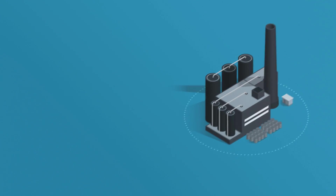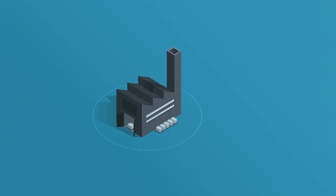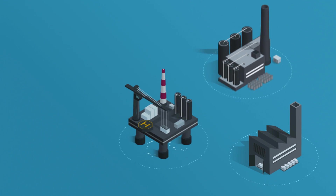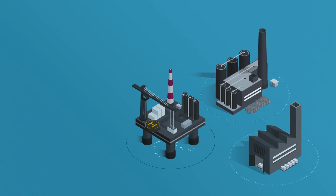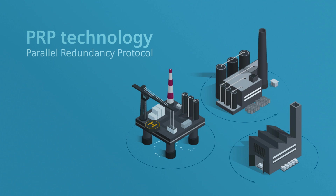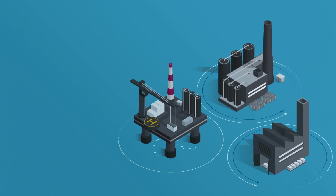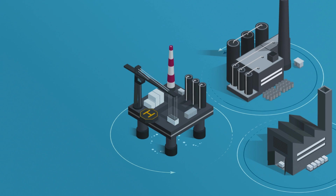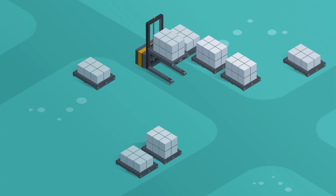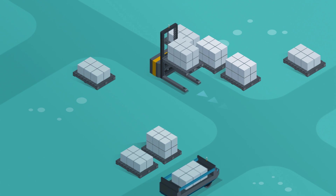Fast and reliable communication is the most important requirement in industrial networks. And to achieve seamless redundancy, PRP technology is the preferred choice. Two redundant networks transfer the data flow simultaneously. This means the system is not affected if one of the two networks fails. Wireless transfer is often the only choice, particularly if one of the communication partners is on the move.